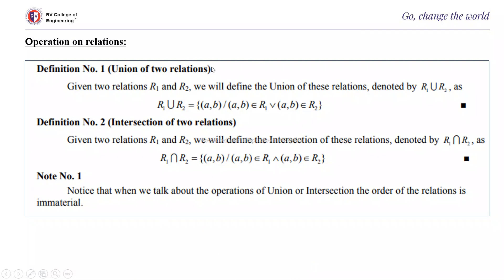Next is the union of two relations. Given two relations R1 and R2, the union is given by {(a,b) : (a,b) belongs to R1 or (a,b) belongs to R2}. It is the elements of R1 as well as elements of R2 written only once. The intersection R1 ∩ R2 is {(a,b) : (a,b) belongs to R1 and (a,b) belongs to R2} — that is, the common ordered pairs. For union and intersection operations, the order of the elements is immaterial since it is a set.